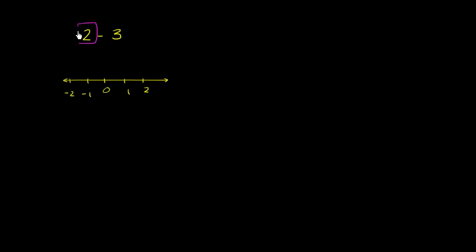We could view this as starting at 2. So this is 2 right over here. And then we're going to subtract 3 from that 2. So we're going to move 3 to the left on the number line. So we're going to move 3 to the left: 1, 2, 3. And that gets us to negative 1. This is equal to negative 1.